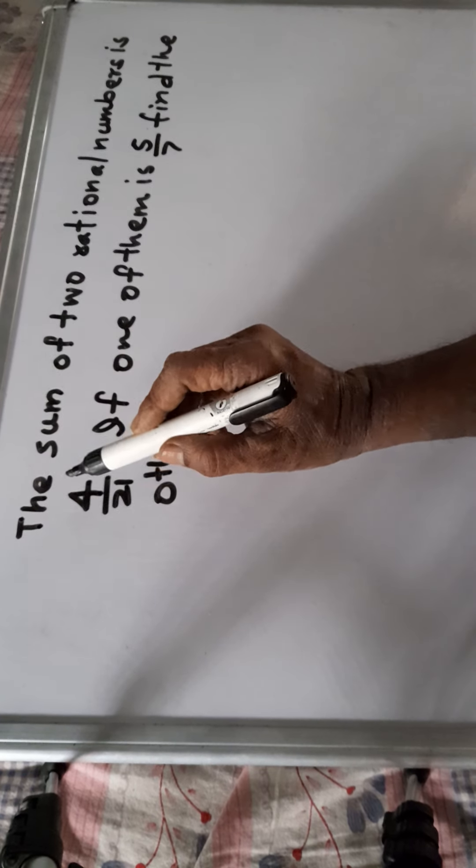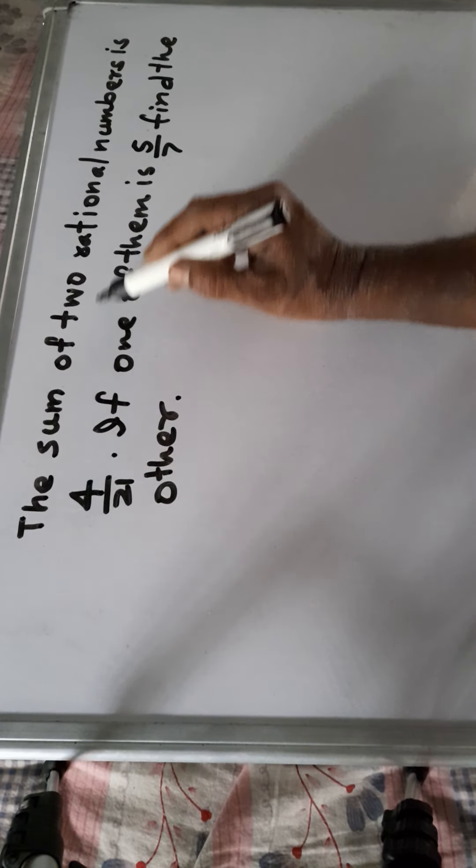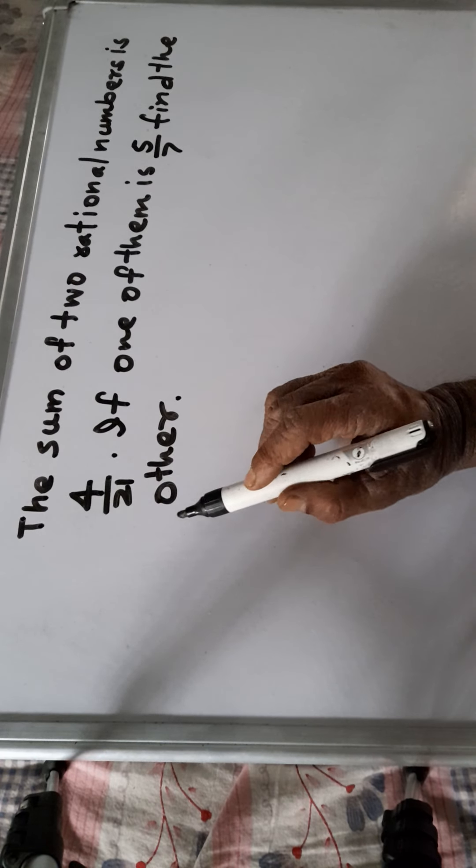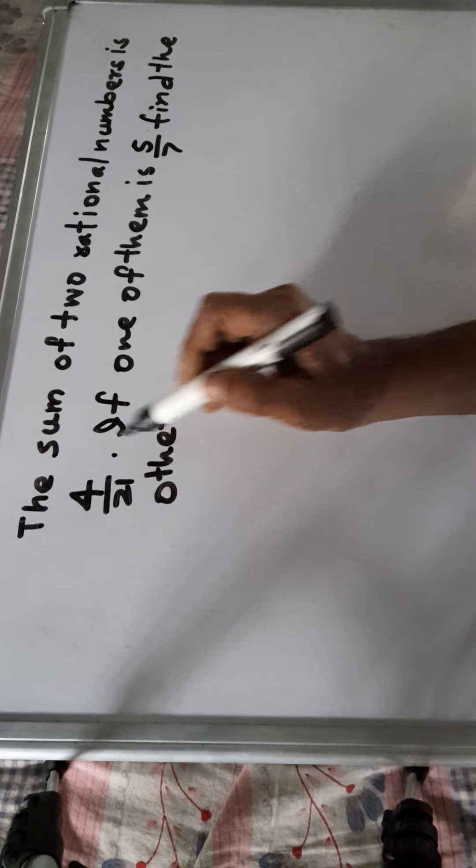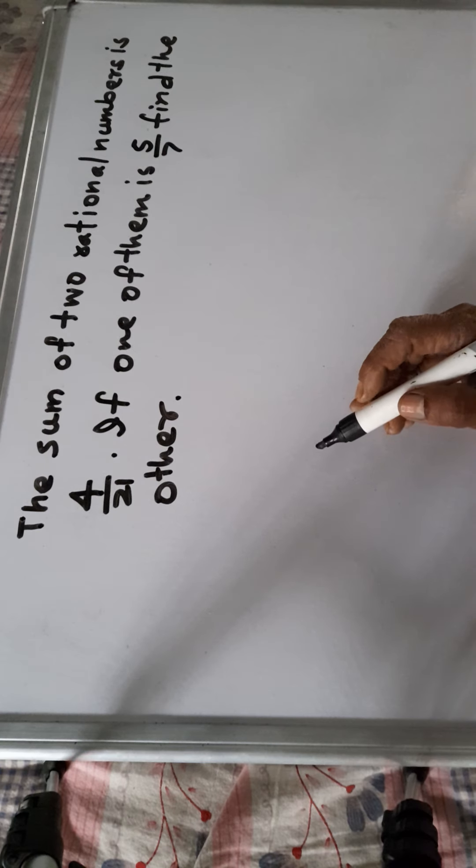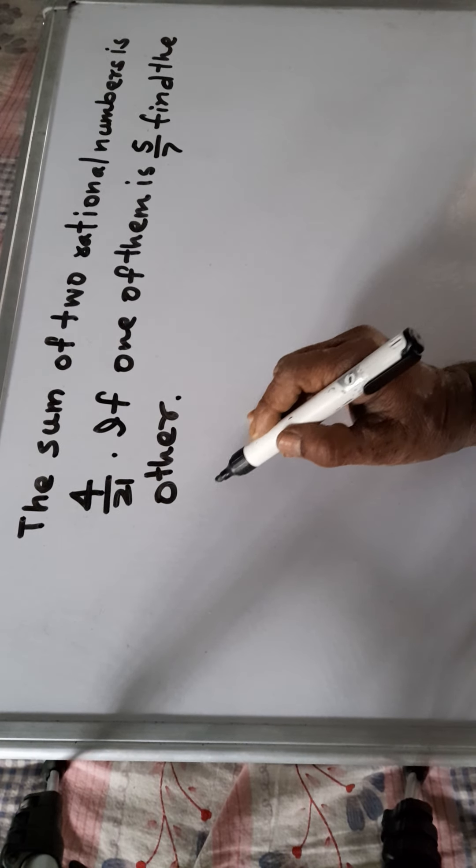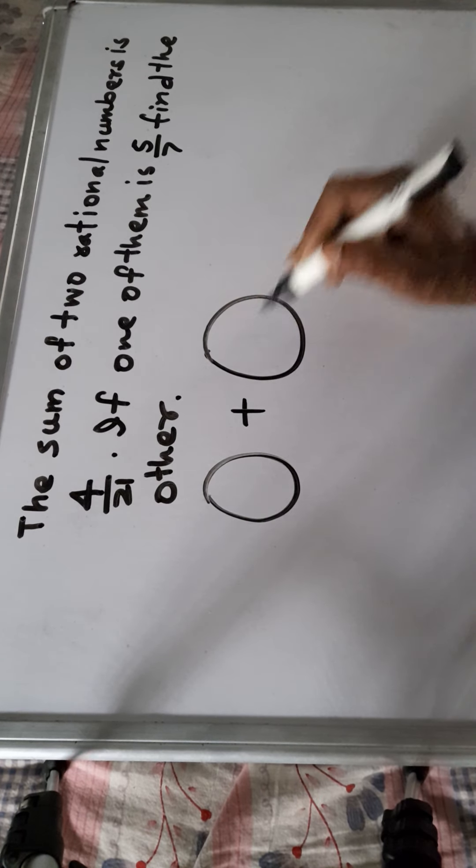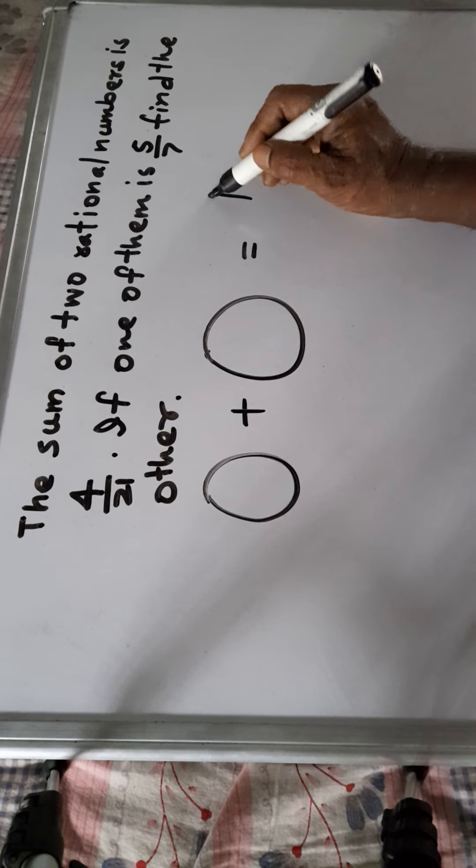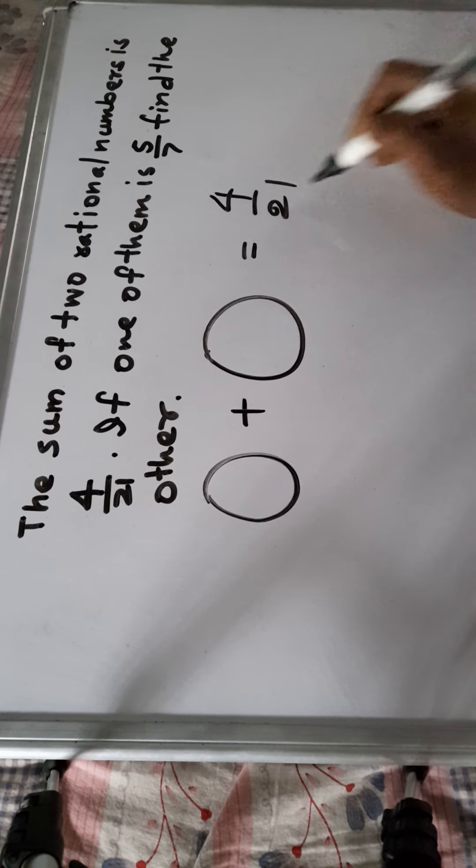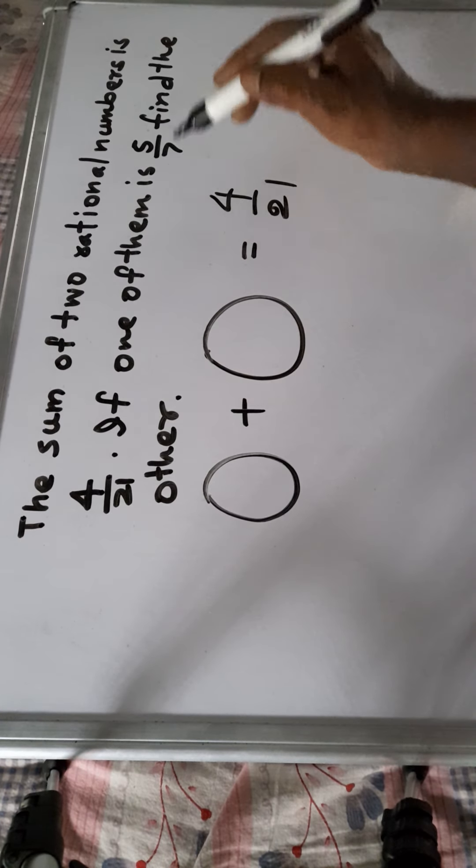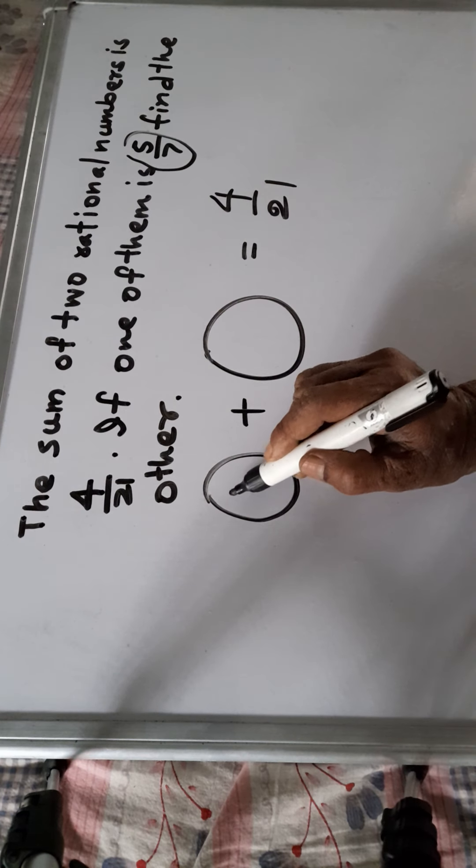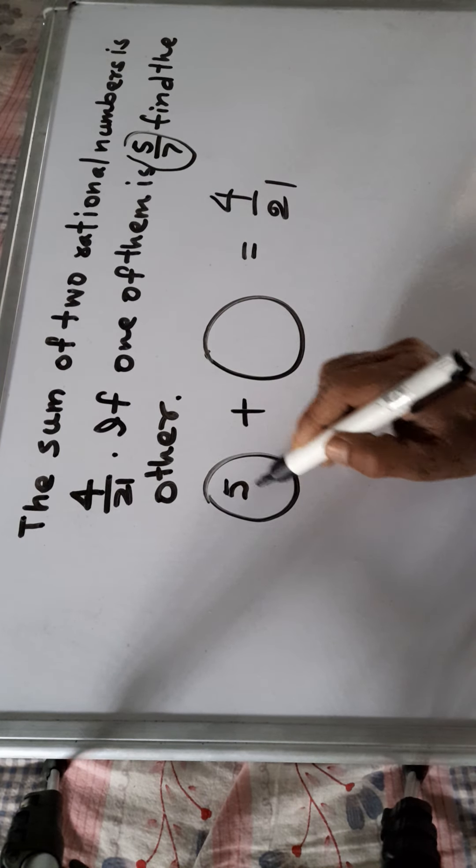And the sum is like that the sum of 2 rational numbers is 4 by 21. Sum of 2 rational numbers are given and that is 1 rational number plus 2 rational number is given and that is 4 by 21. And if one of them is 5 by 7, so one of them is 5 by 7, it is given in the question.